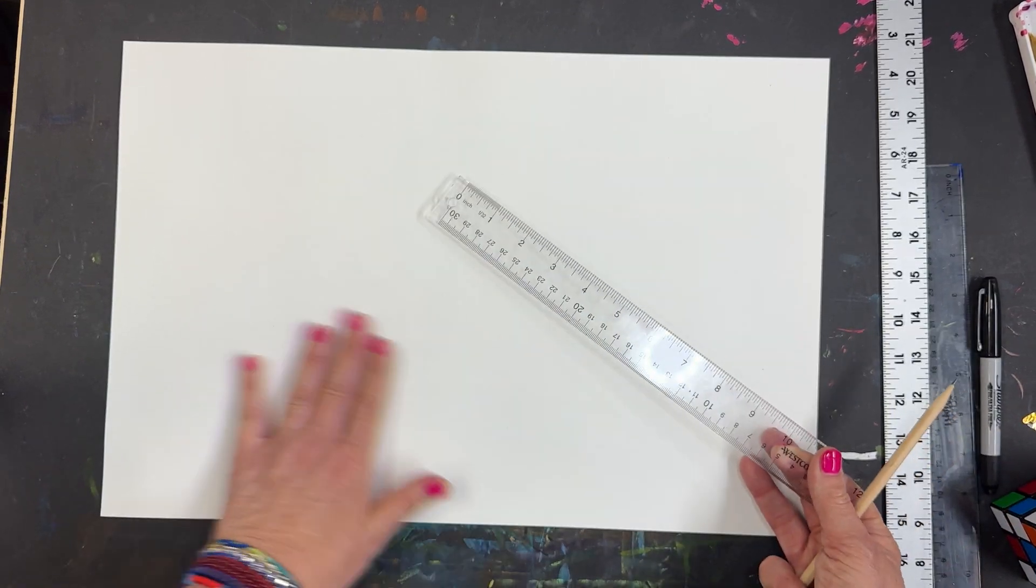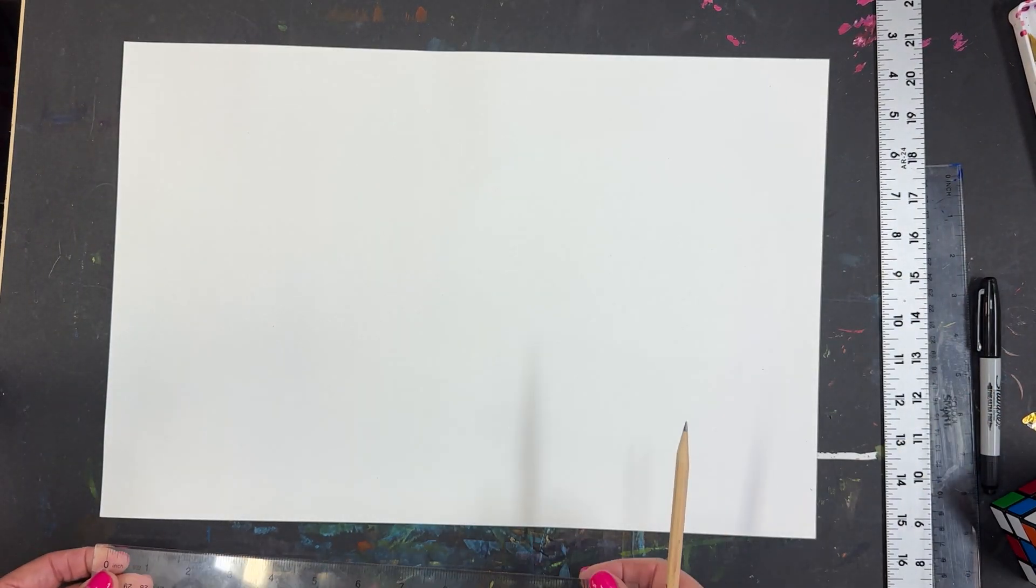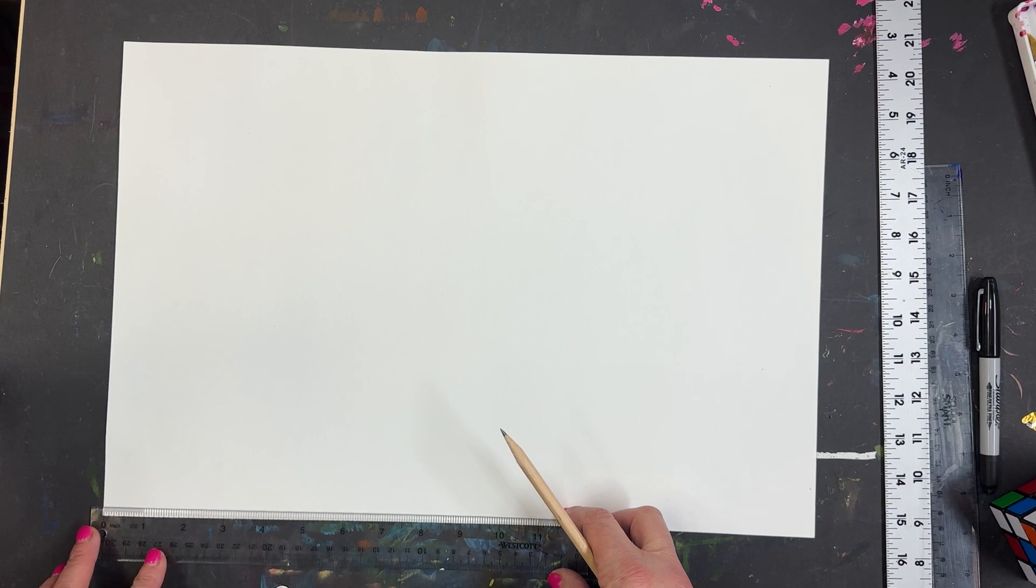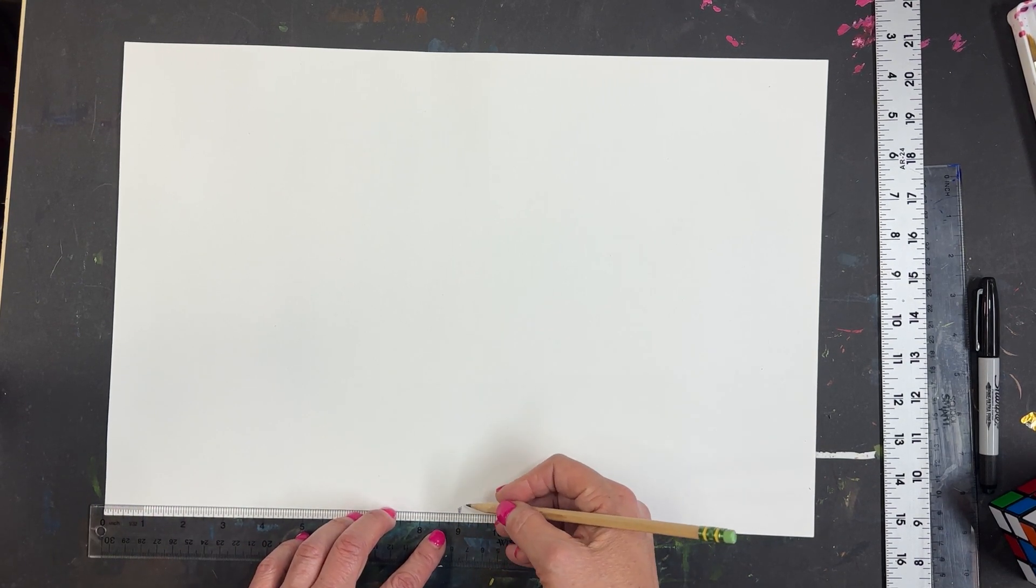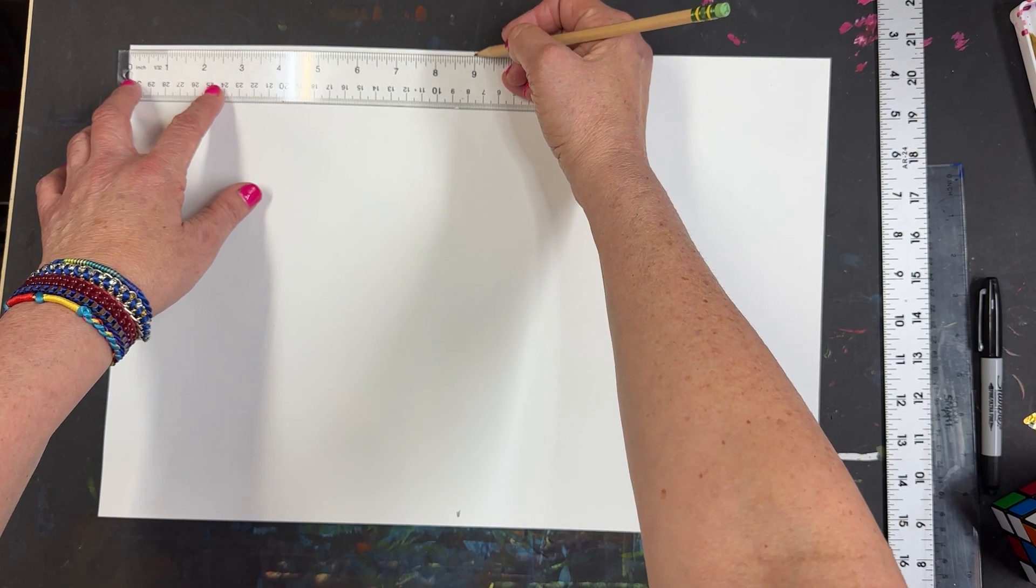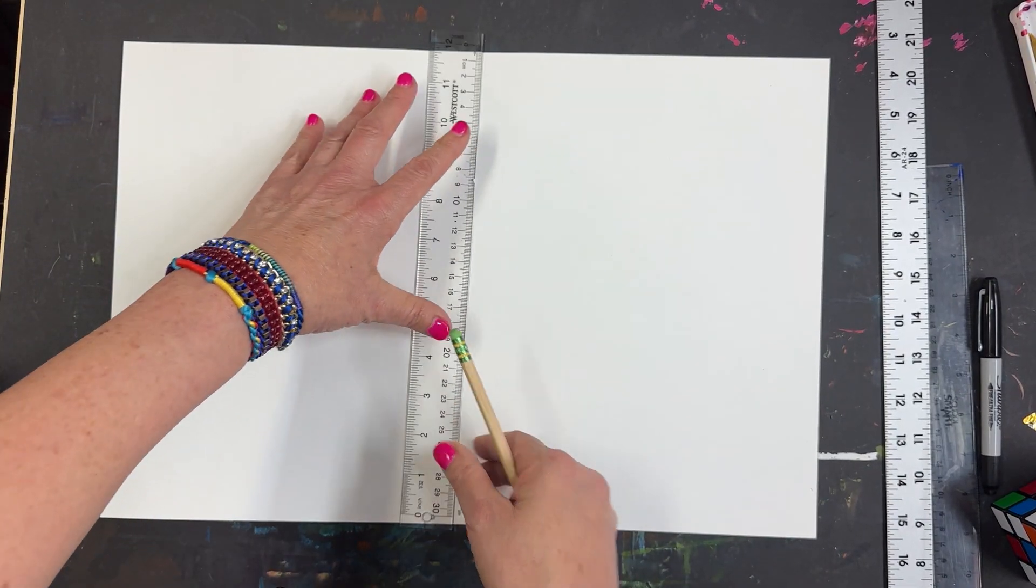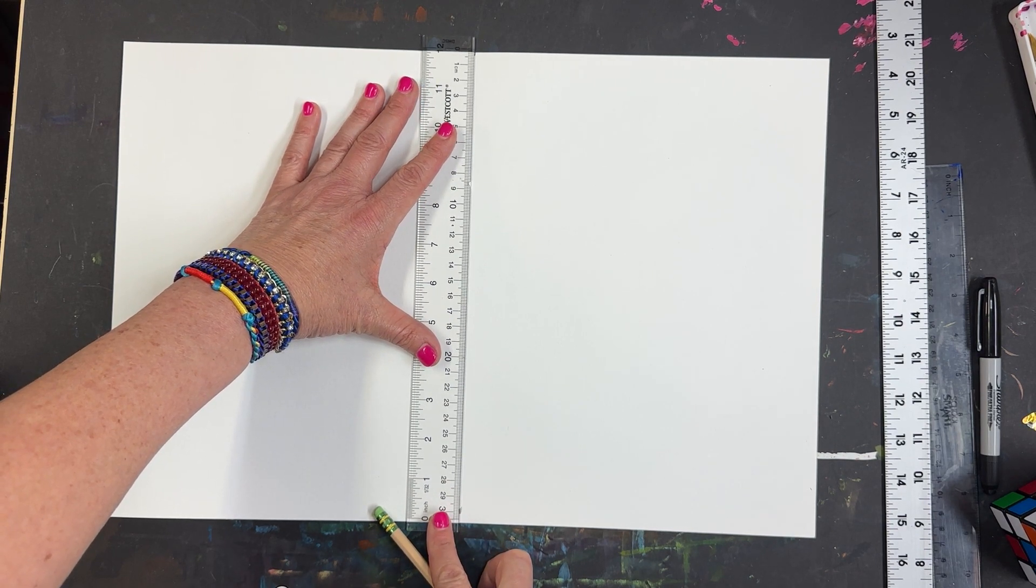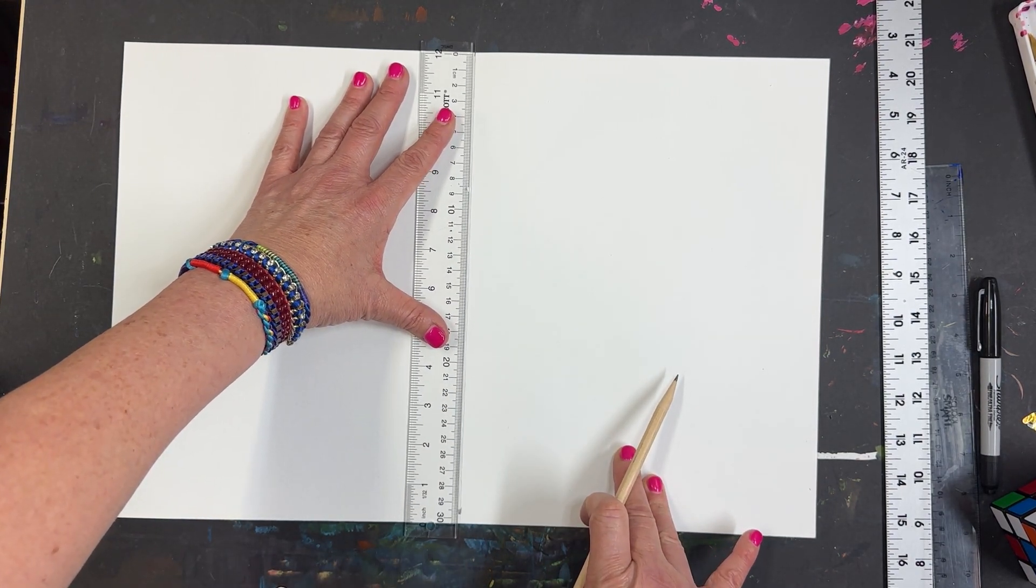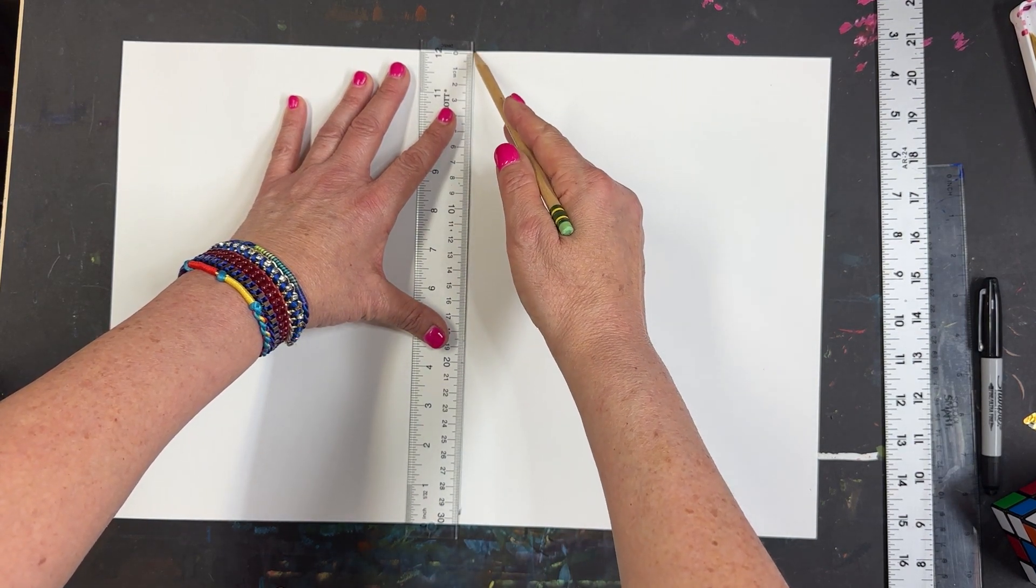Basically, you want to—half of 18 is 9—so we want to put a vertical line down the middle. I'm going to line up my ruler, the zero at the end, and make sure it's straight. You just want to mark a little point here where there's a 9, and then do the same thing up on top so that you can make sure you get a perfectly straight line there.